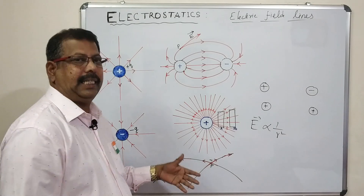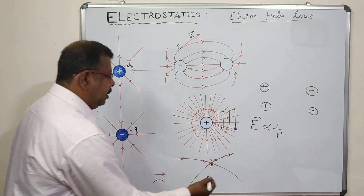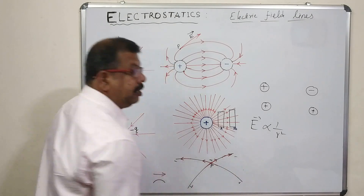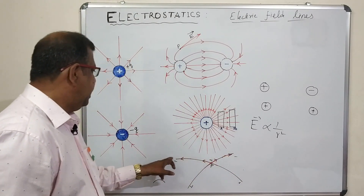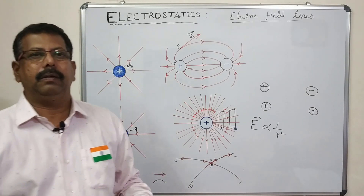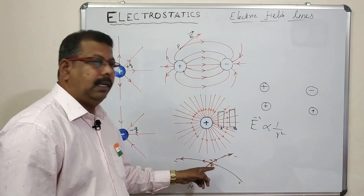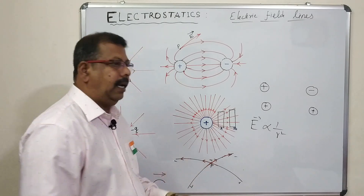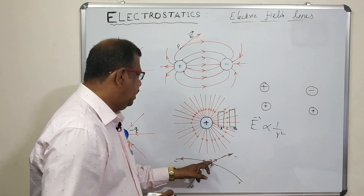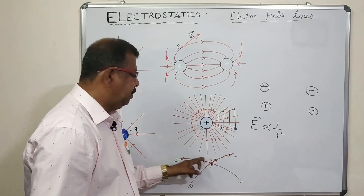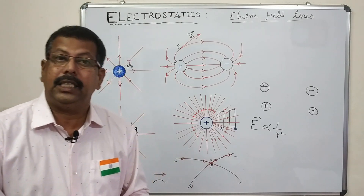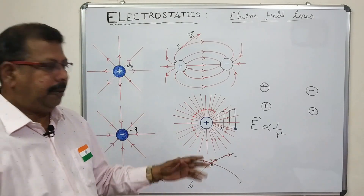Why can't electric field lines intersect? Suppose they did intersect at a point. Electric field lines start from positive and end at negative. If we place a test charge at that intersection point, it is impossible for it to move in two directions at the same time. Therefore, intersection is impossible.